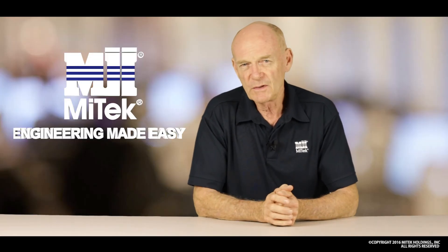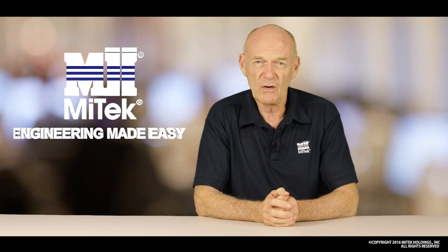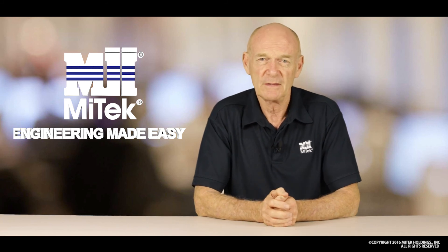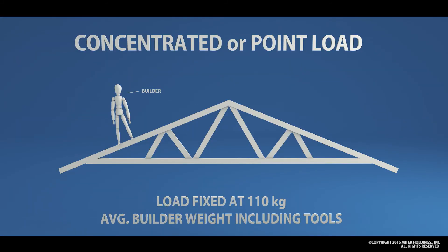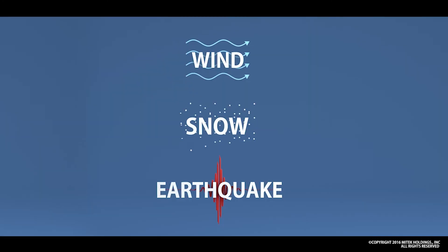The other live load related to people is that of the concentrated load or point load. This is related generally to the weight of the builder or tradesman doing construction work or maintenance. The standard has determined that this load is fixed at 110 kilograms — the average weight of the builder or tradesman — and is applied to any external part of the structure. This means that as well as our normal design checks for snow loads, wind loads, and earthquake loads, we need to make sure that individual structural members are capable of taking this concentrated load.